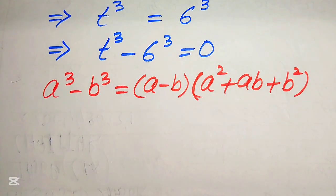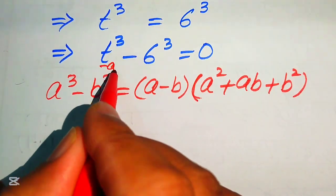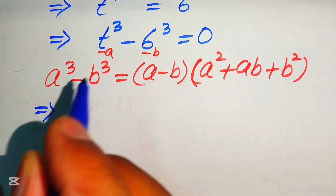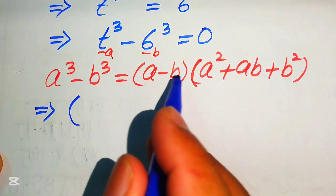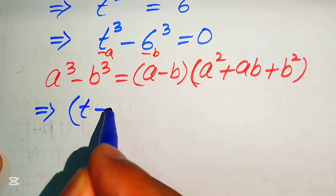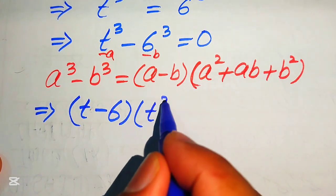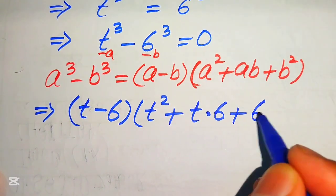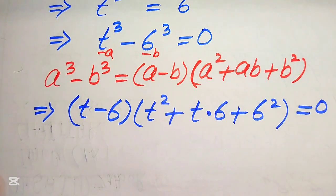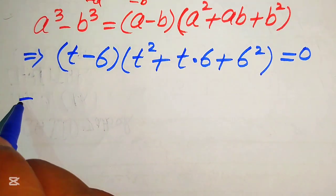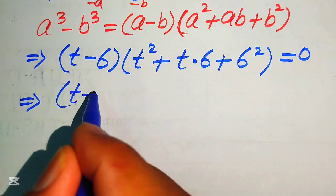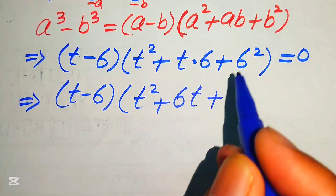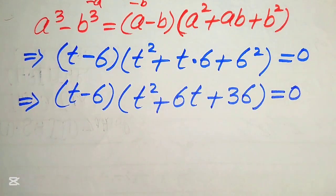According to this formula, our a is t and our b is 6. We write t cubed minus 6 cubed as t minus 6 times t squared plus t times 6 plus 6 squared, the whole equation equals to 0. Rewriting, this is t minus 6 times t squared plus 6t plus 36 equals to 0.